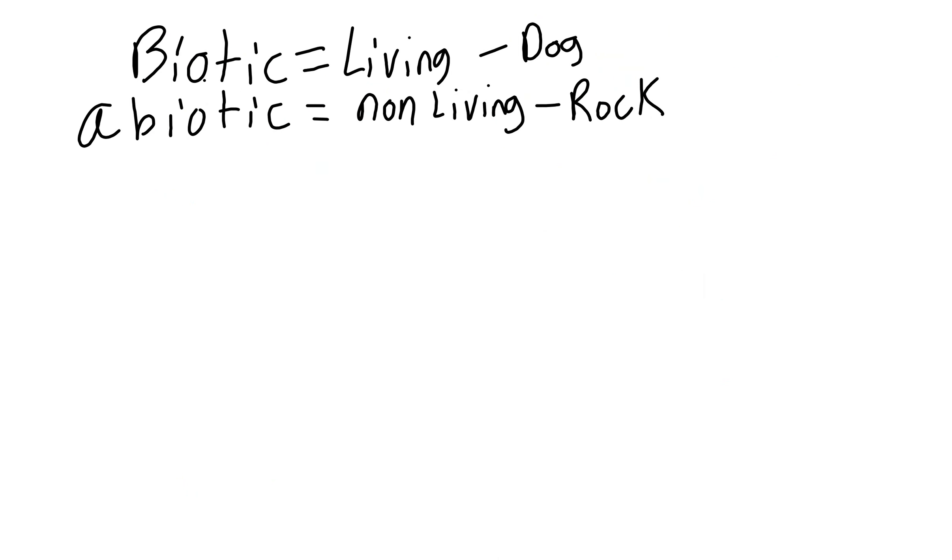Remember, biotic are living things. Abiotic are non-living things. And remember that increasing the organic matter in soil, gardeners call that mulch or compost. That's going to help improve the nutrition in the soil.